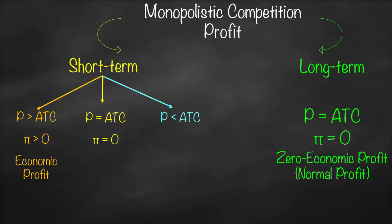If price is equal to average total cost, our profit will be equal to zero, meaning we have zero economic profit. Consequently, firms will not leave the market and new firms will not enter the market.